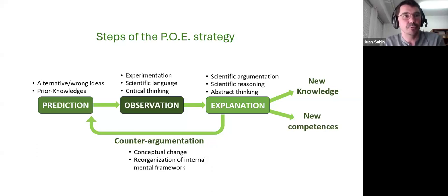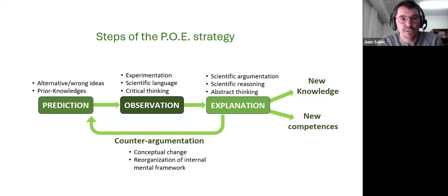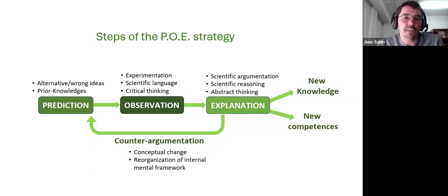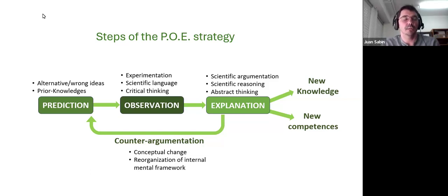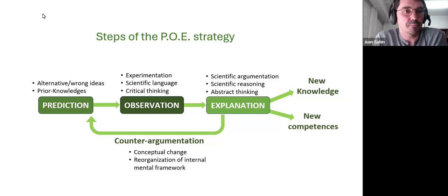The next step is going to the lab to do the hands-on experiment that students predicted. The observation step places special focus on critical thinking and abstract thinking. Students should be able to see more than just objects — they should see vectors, energies, and forces. The teacher has an important role in encouraging students to see beyond what they simply observe.